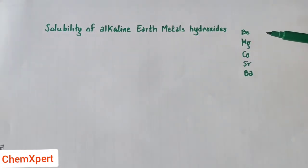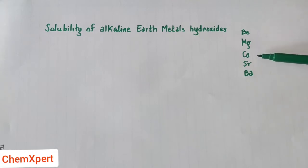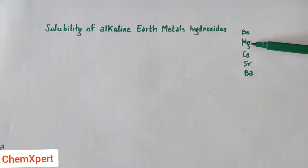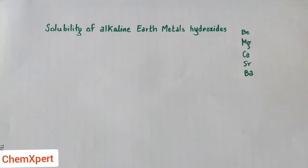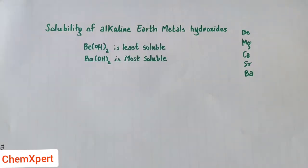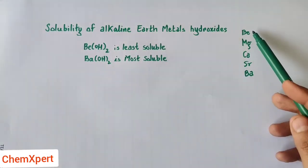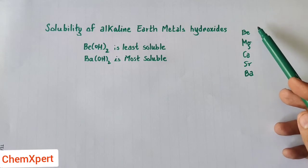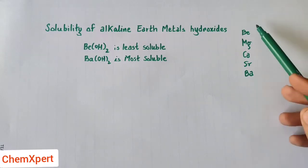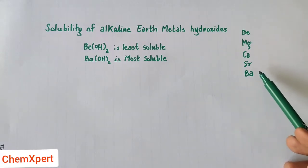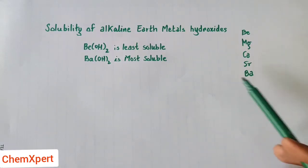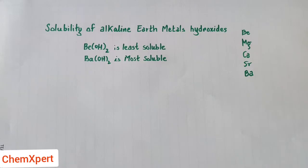The alkaline earth metals are beryllium, magnesium, calcium, strontium, and barium — remembered by the mnemonic: beta, mange, car, scooter, bap. Beryllium hydroxide is the least soluble, and as we move down the group, solubility increases, due to which barium is the most soluble.